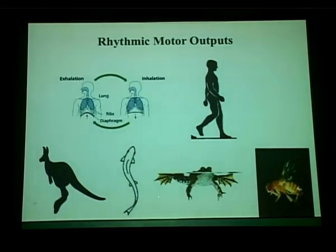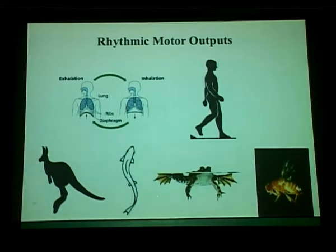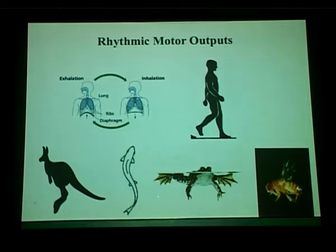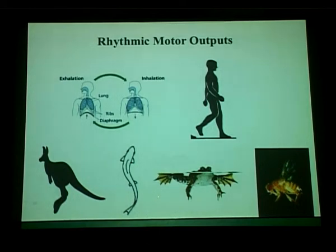All animals generate rhythmic motor outputs. Some are essential for viability, such as breathing. Others allow us to explore the environment, whether in the form of walking, hopping, swimming, crawling, or flying. Although each motor circuit is specifically designed to allow an animal to generate very specific motor output, I would like to argue that there are some fundamental designs of the motor circuit shared across animals, including the ability to generate motor antagonism.